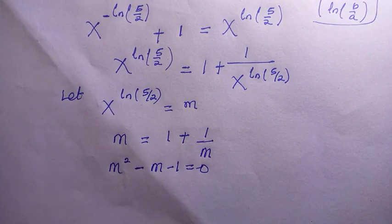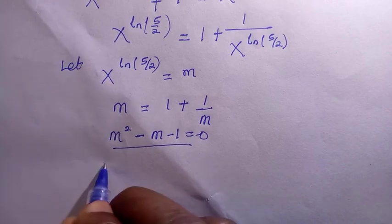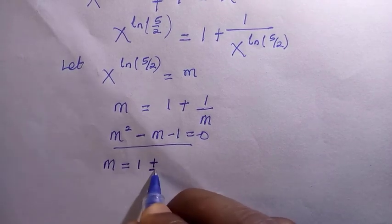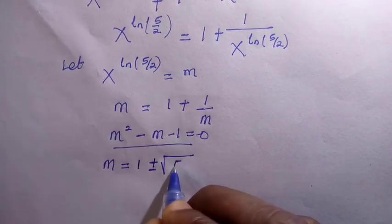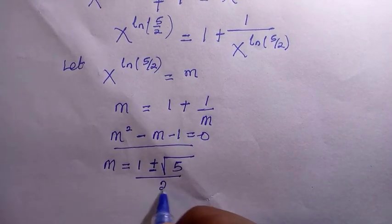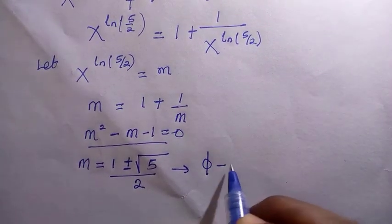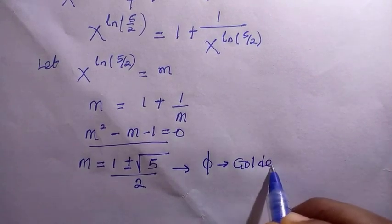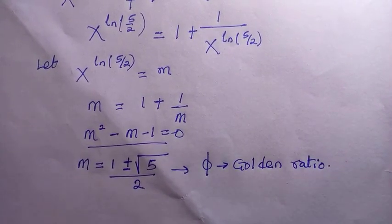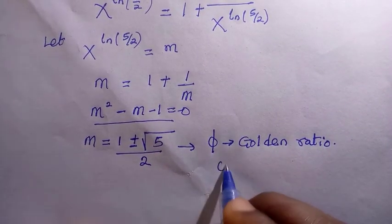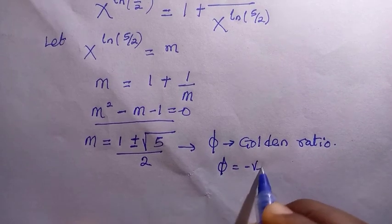Solving this quadratically, we get two solutions. The second solution is m equals 5 divided by 2 — so m equals phi. This is the golden ratio, and since a negative value would make the problem invalid, we only work with the positive value of phi.